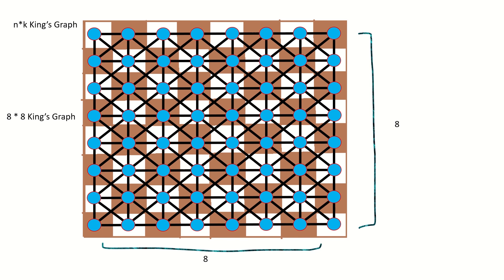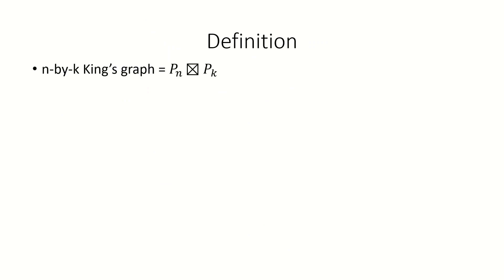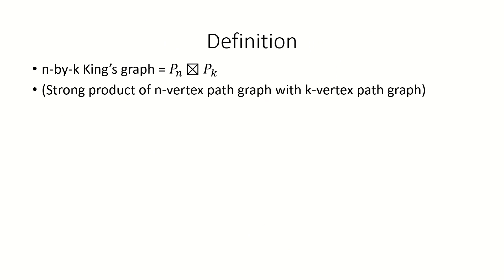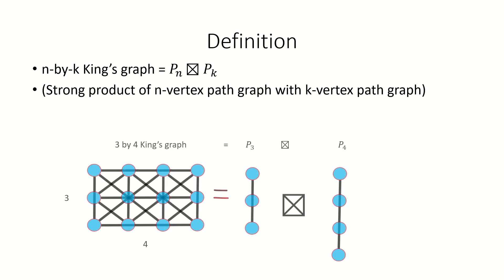In graph theory terms, an n×k king's graph is defined as the strong product of a path graph with n vertices with a path graph with k vertices. For example, a 3×4 king's graph is the strong product of a 3-vertex path graph with a 4-vertex path graph.